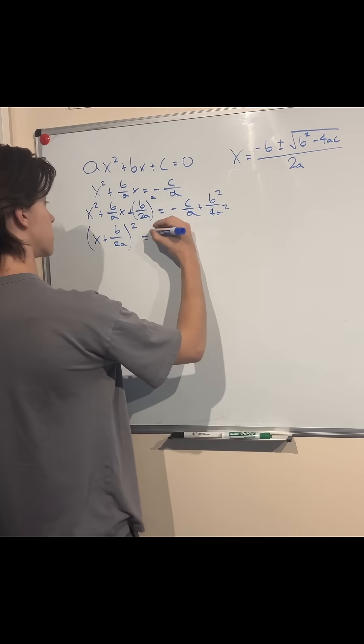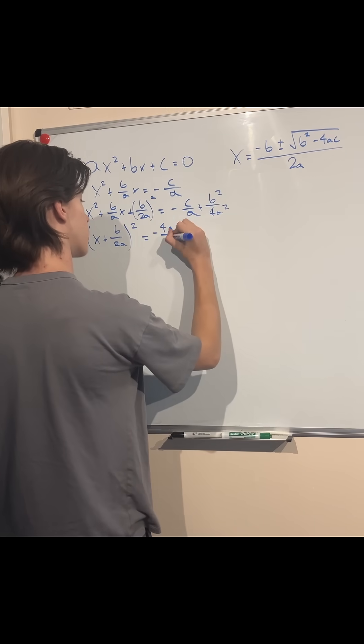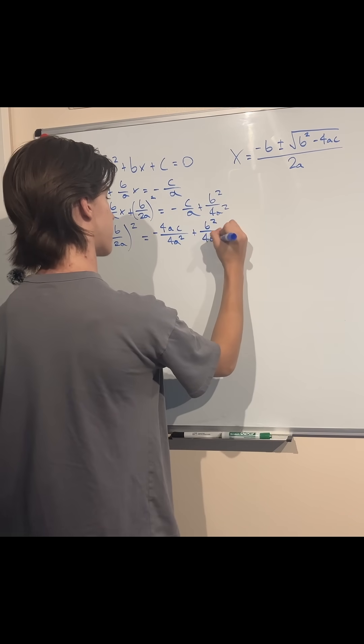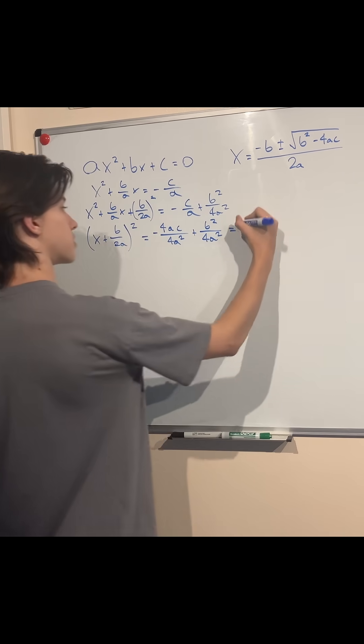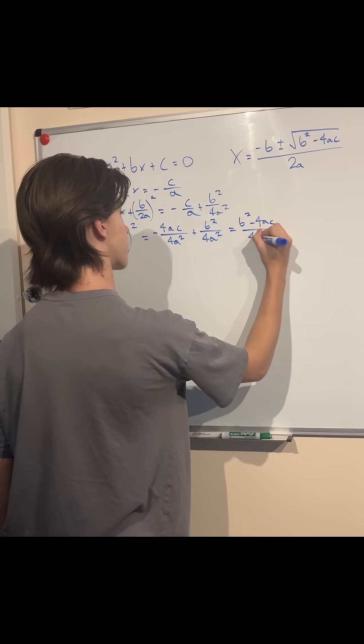We convert to a common denominator, we get -4ac/4a². And the rest, we add them together, we get (b² - 4ac)/4a².